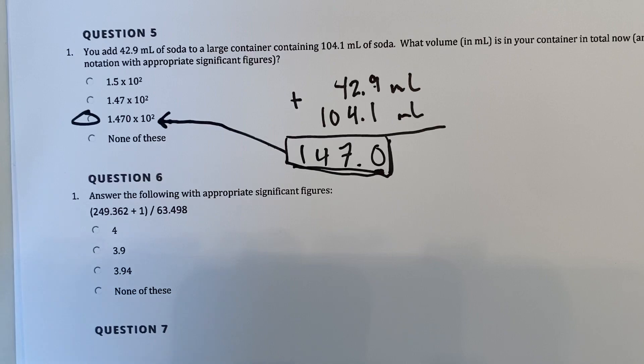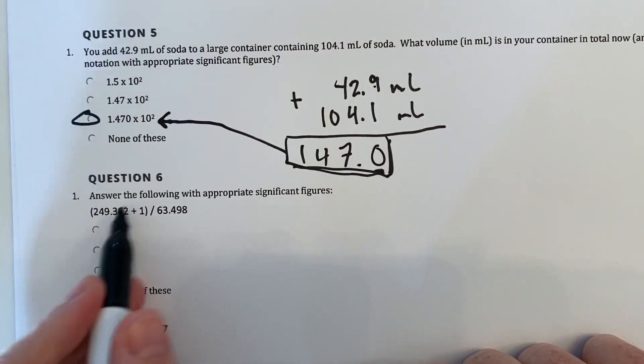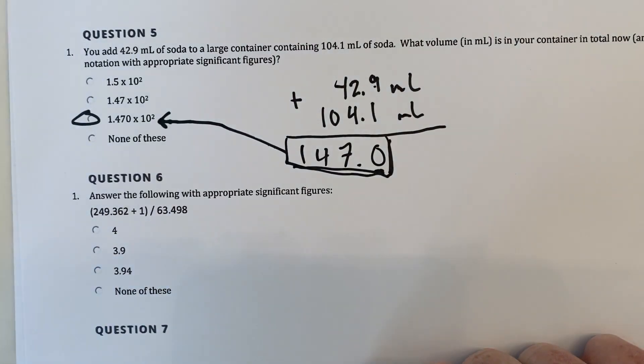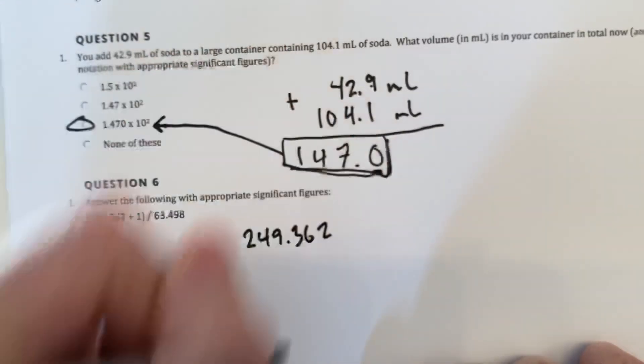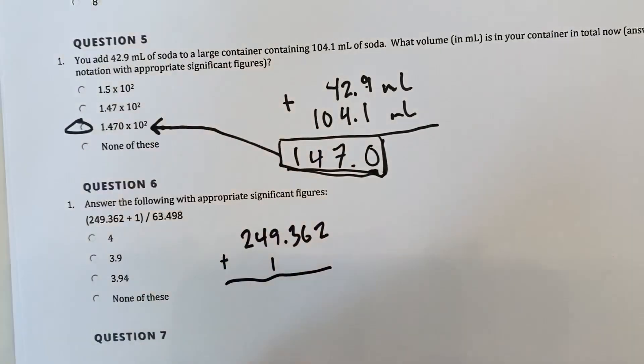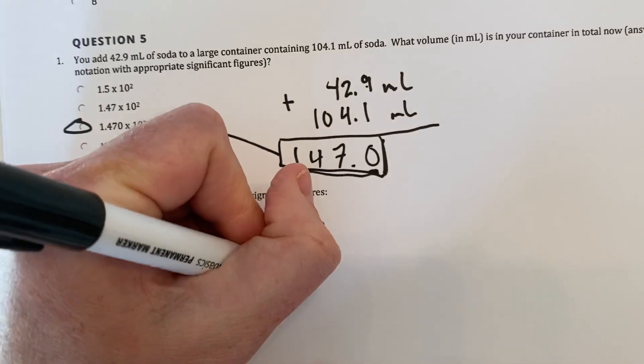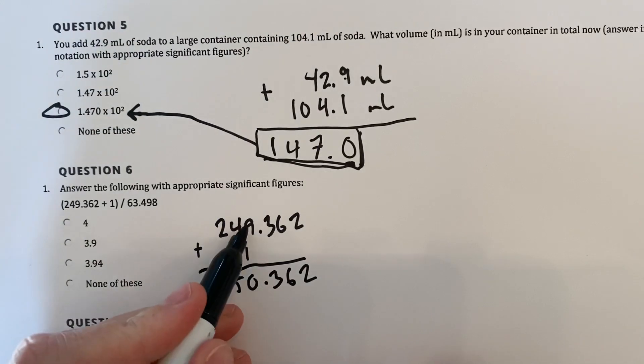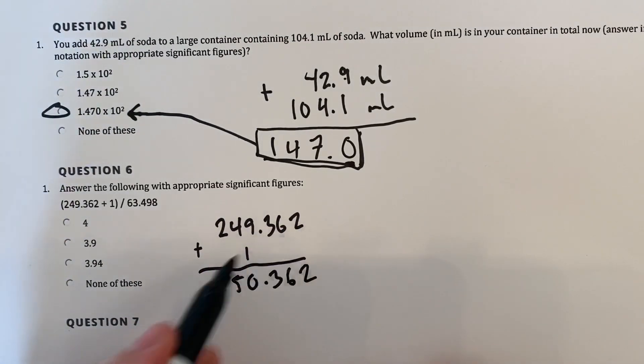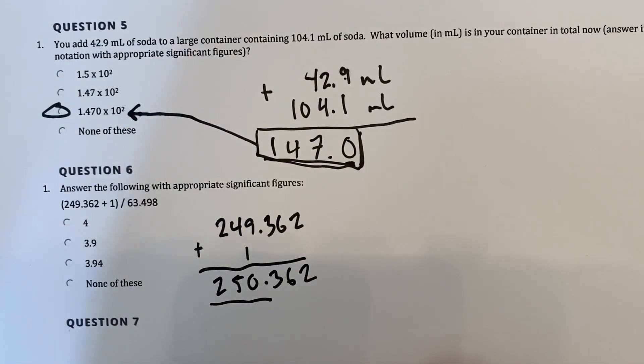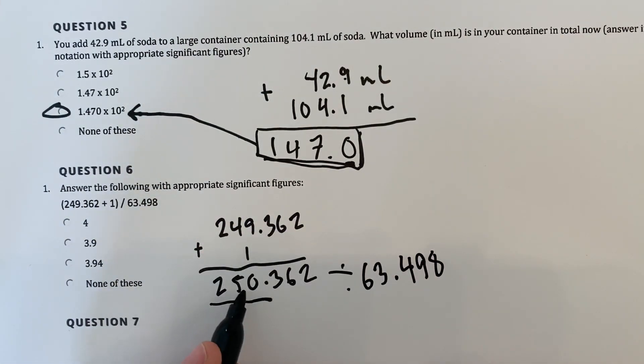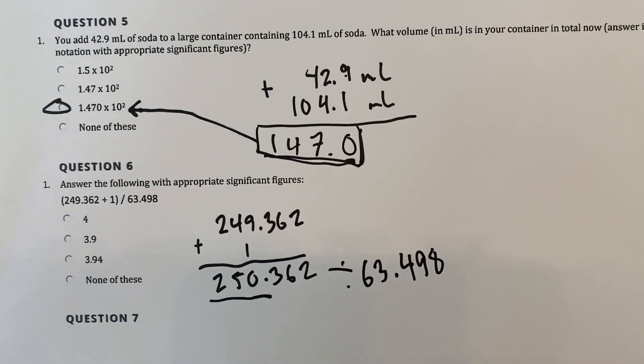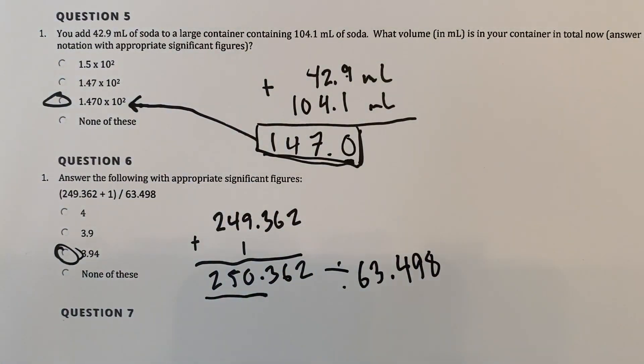Alright, number six. So answer the following with appropriate sig figs. So here it looks like we've got some addition and subtraction, and some multiplication and division. You need to know that those two things have different rules. So we're going to first add the 249.362, so you'd follow just regular PEMDAS rules. To that we will add 1, and you get an answer of 250.362. So we should pay attention to the fact that we actually knew this, this one we knew all the way to the tenths, hundredths, thousandths place, but this one we only knew the ones place. So technically we only know this answer to the ones place, telling us we know this one, this one, and this one. It's got three sig figs. Now when we go ahead and divide this by 63.498, we've got something with three sig figs, even though we use those extra numbers. Dividing it by something with five sig figs will give us an answer with three sig figs, and that's why 3.94 is our answer.